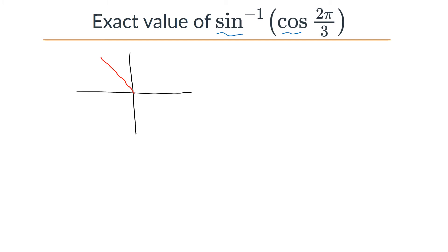So we have the angle theta equal to 2π/3. Now we find the reference angle. Since π represents a straight line, the reference angle is the difference between π and the given angle, which is π − 2π/3 = π/3. So the reference angle θ_r is π/3.